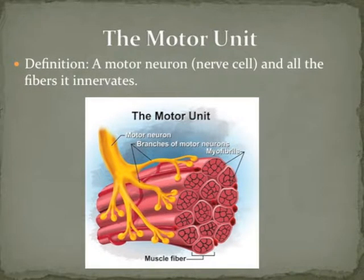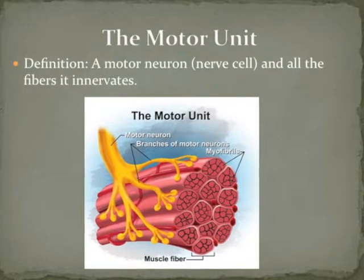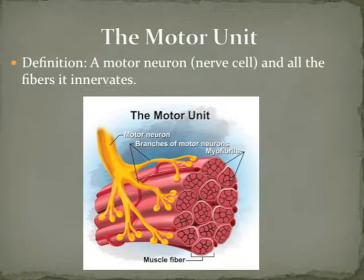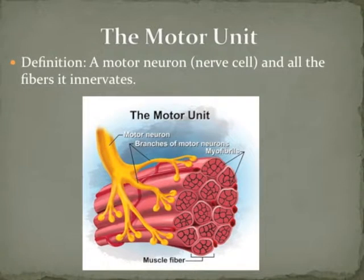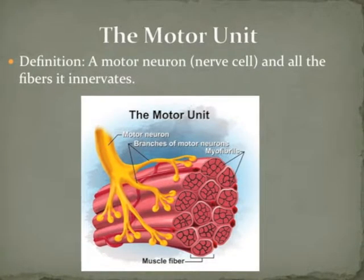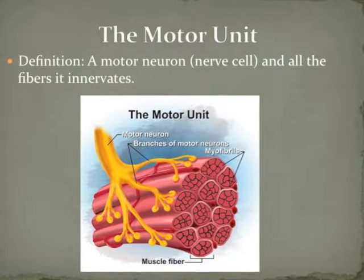This is what we call muscle memory. Muscles certainly don't have memory, but when we recruit motor neurons and we continue to recruit them through each workout, this creates a natural pattern for them to fire. This is what occurs to help muscles contract in an effort to make them hypertrophy.